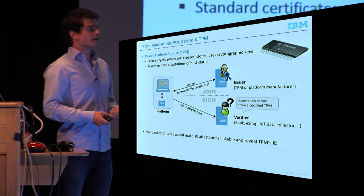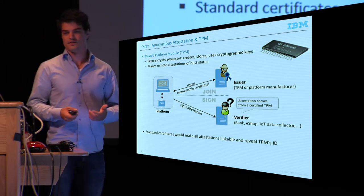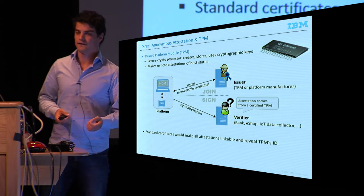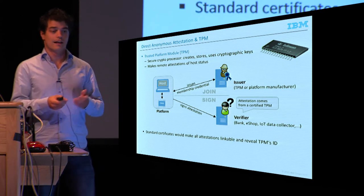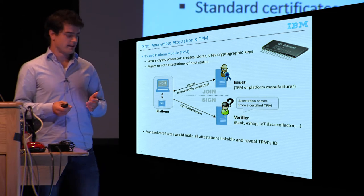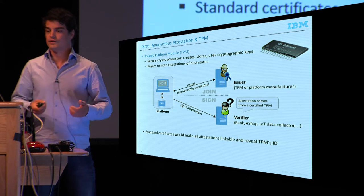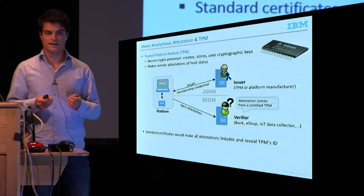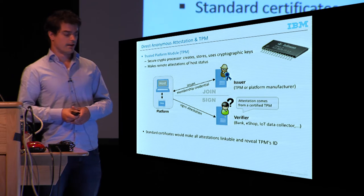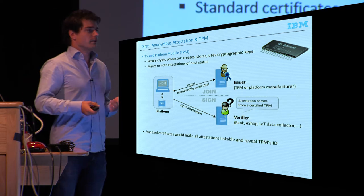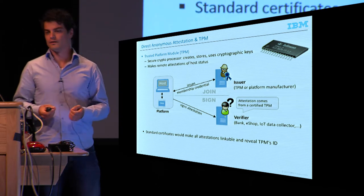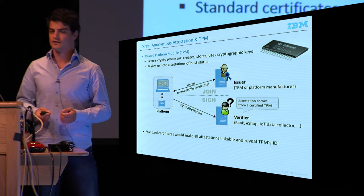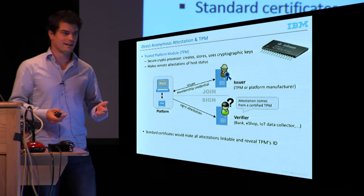It might be interesting to perform remote attestation using this. The TPM will convince a remote verifier that the laptop started some certain good software — so it's not running malware, but running whatever we expect it to be running. For example, in a corporate network, you might want laptops to first attest that they're running secure software before you let them onto the network.